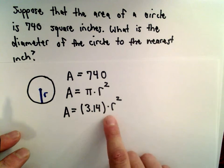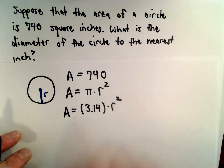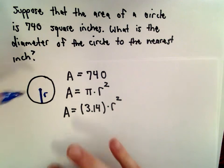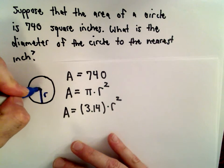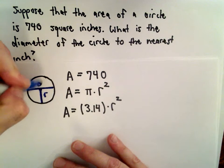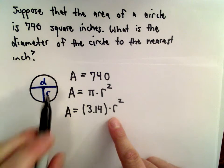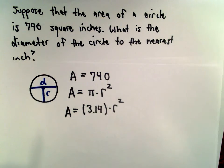So the idea is we're going to be able to use this information about the area to solve for the radius, and recall that the diameter is actually the distance all the way across the circle. So once we get the value for r, we'll simply multiply that by 2, and that's going to give us the diameter.